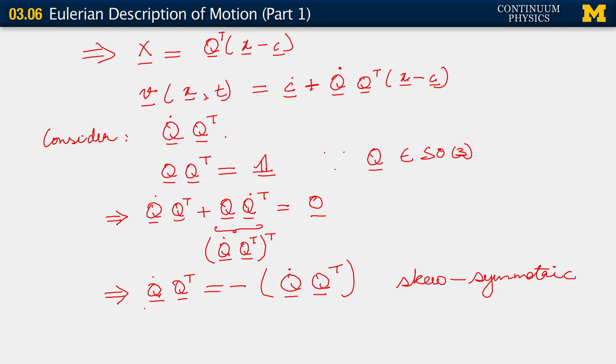For convenience, we are going to label this product omega. It's a skew symmetric tensor. And out here we have omega transpose equals minus omega transpose. So what this implies for us now is that for rigid motion, the Eulerian velocity or the spatial velocity can be written as c dot plus omega times x minus c, where omega is skew symmetric, where omega equals minus omega transpose.